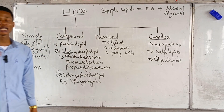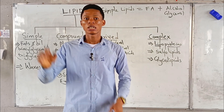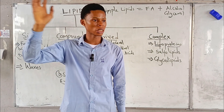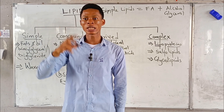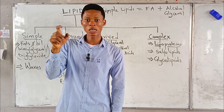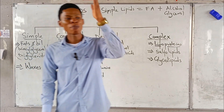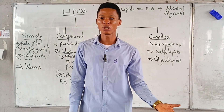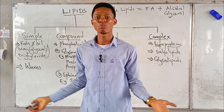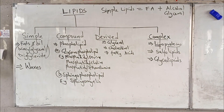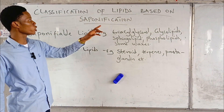We are going to look at them one after the other. No cramming — understand it. Simple lipids have fatty acid and alcohol. If you add an additional compound, it becomes a compound lipid. If the alcohol is glycerol, it's a glycerophospholipid. If the alcohol is sphingosine, it's a sphingophospholipid. If you break down simple or compound lipids, you get derived lipids. If you add lipid with another macromolecule, you get complex lipids. Now let's look at classification of lipids based on saponification.